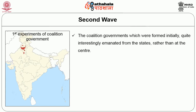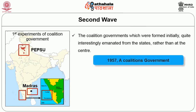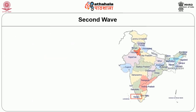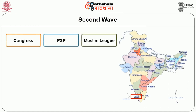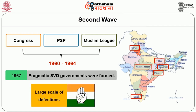The first coalition experiments at state level were made in Madras, Travancore-Cochin, and PEPSU. In 1957, a coalition government of Congress and Ganatantra Parishad came into being in Madras and was in existence till 1961. In Kerala, the coalition of Congress, PSP, and the Muslim League came to power between 1960 and 1964 — after the Communist Party government of 1957 was dismissed in 1959 and President's Rule was imposed.